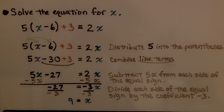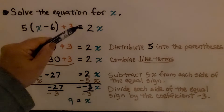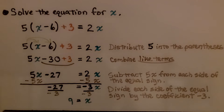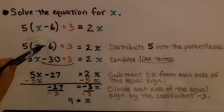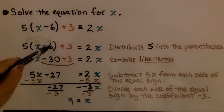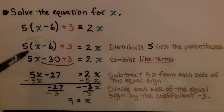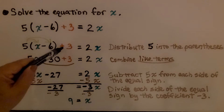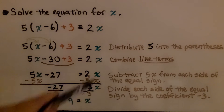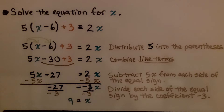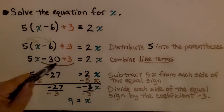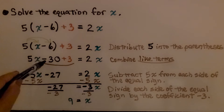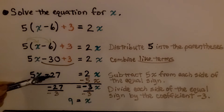Here it's telling us to solve the equation for x. We have 5 times (x minus 6) plus 3, and it's equal to 2x. First thing we do is distribute the 5 to the x and to the negative 6. Remember the sign goes with the number. So we have 5x, and 5 times negative 6 is negative 30. We're going to add this constant 3. We combine like terms: negative 30 plus 3. If we have negative 30 and we add 3 to it, it brings us back up to negative 27.